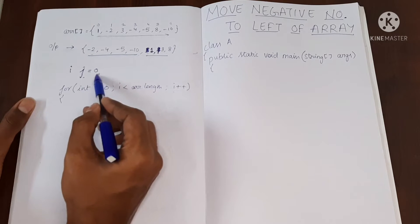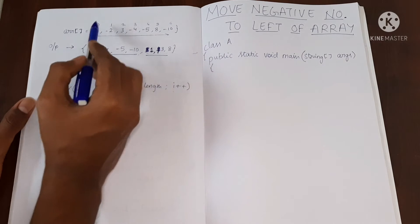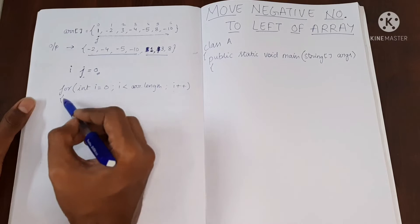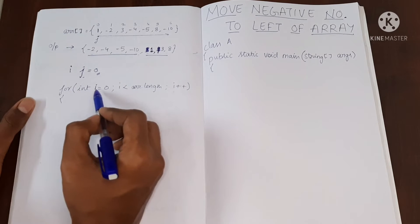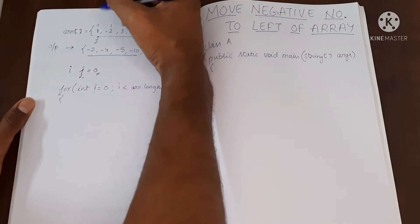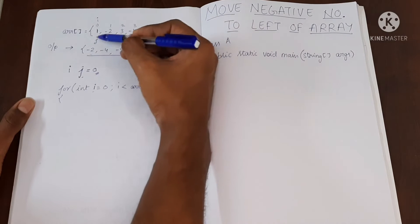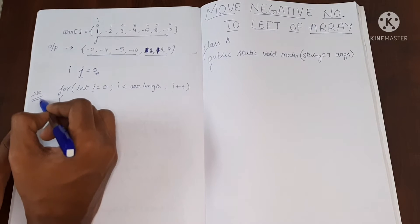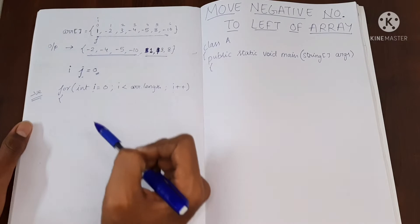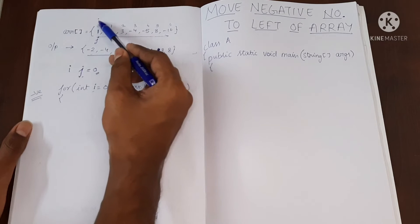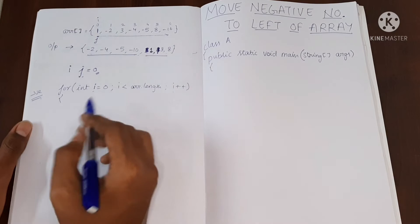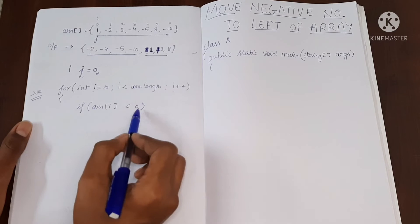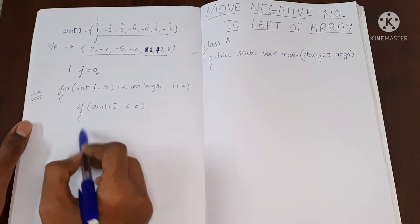I'll be declaring J at zero, so J will be pointing to the zeroth element. Now what we are going to do is: if I find a negative value at the ith location — initially I is also zero, both I and J are here — I'm going to check if the value present at I is negative. If it is negative, I'm going to swap the value with J's value.